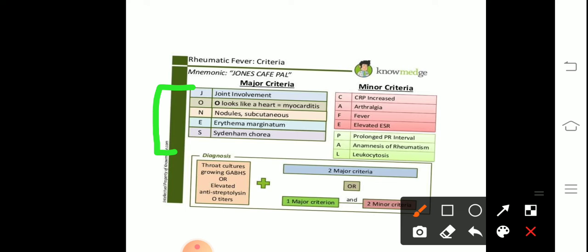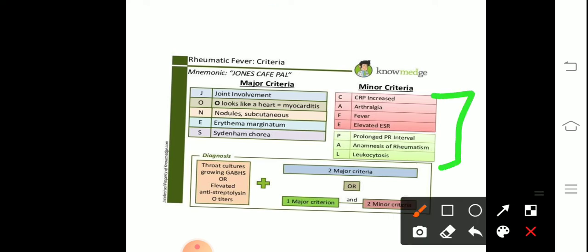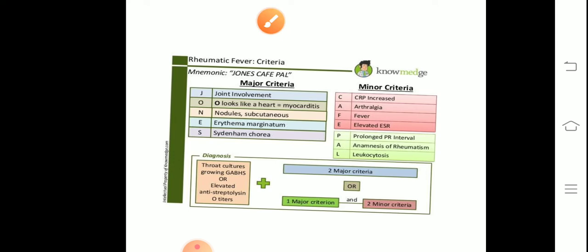In minor criteria the mnemonic is CAFEPAL: C - CRP increased, A - arthralgia, F - fever, E - raised ESR, P - prolonged PR interval, A - anamnesis of rheumatism, L - leukocytosis. Two are major criteria and one is minor criteria. Now you remember the mnemonic JOHN'S CAFE PAL and remember the rheumatic fever very easily.